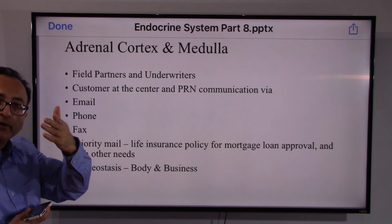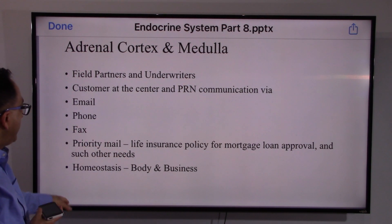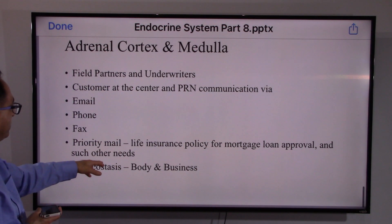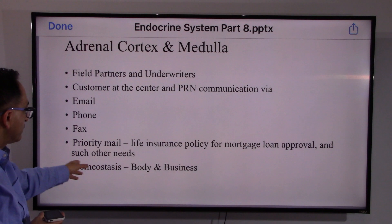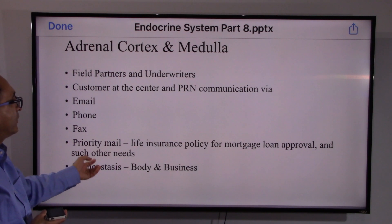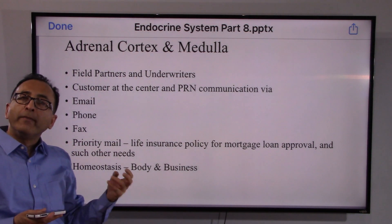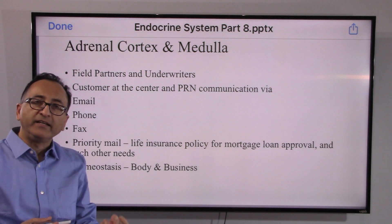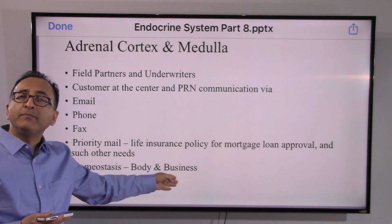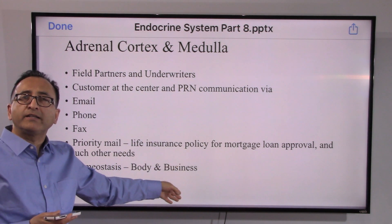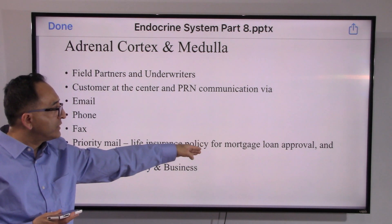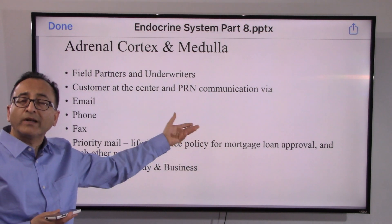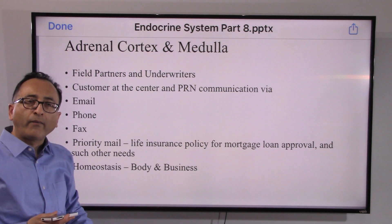We can connect this to our body and business, because homeostasis is what our body does to maintain the internal environment stable, safe, and healthy. Just like that, in business we work together to find solutions in critical scenarios like mortgage loan approval — just one example, there could be many more.